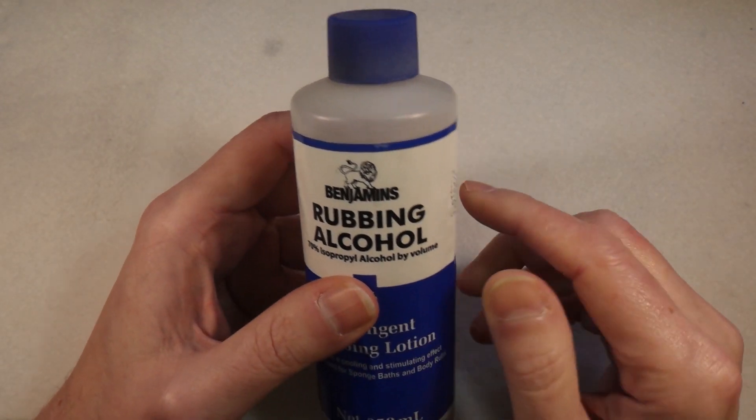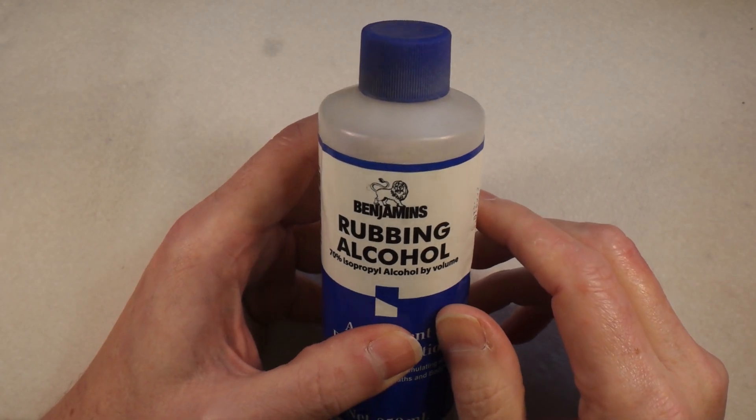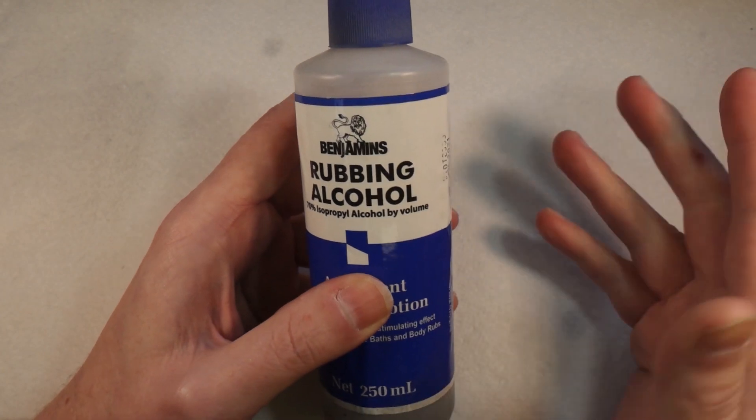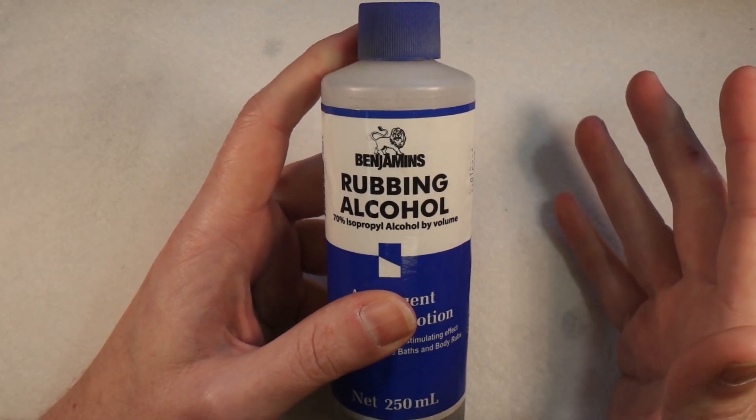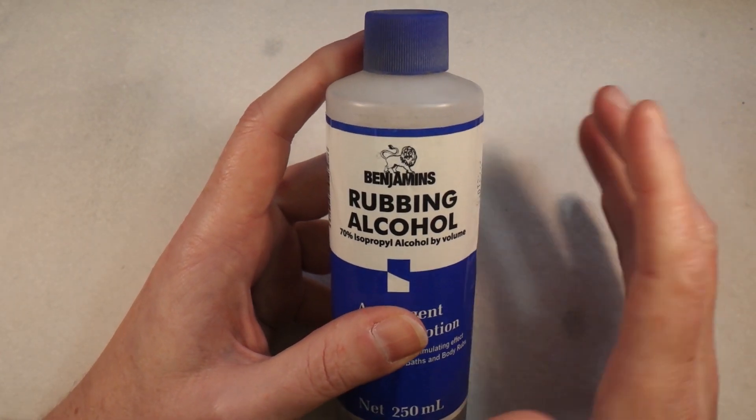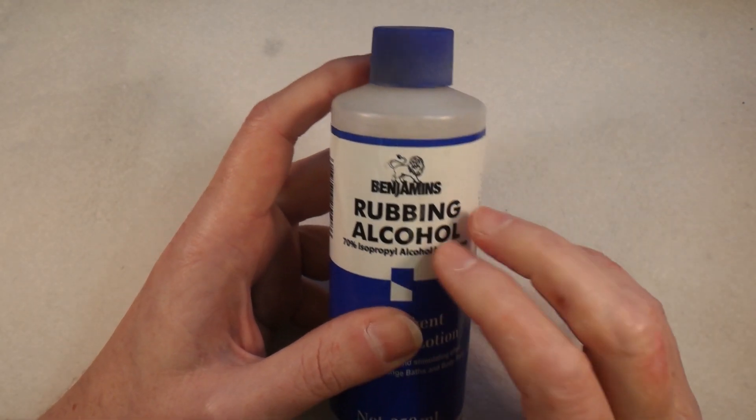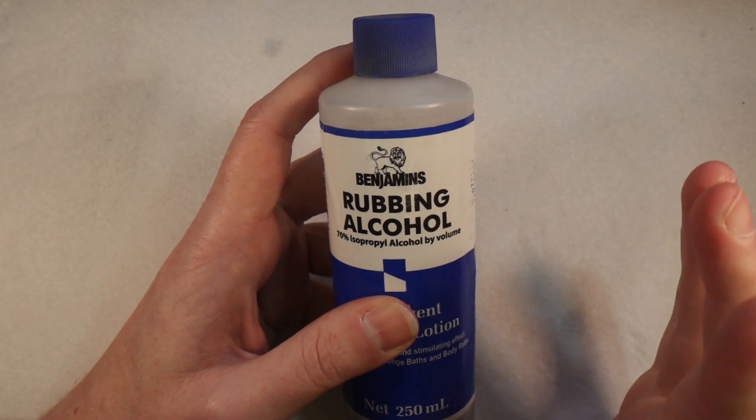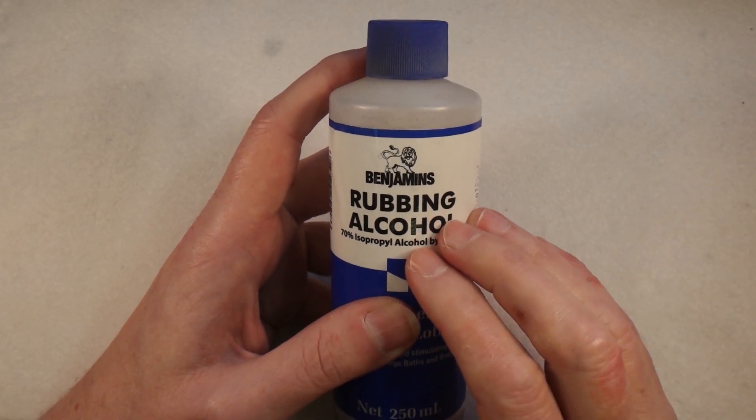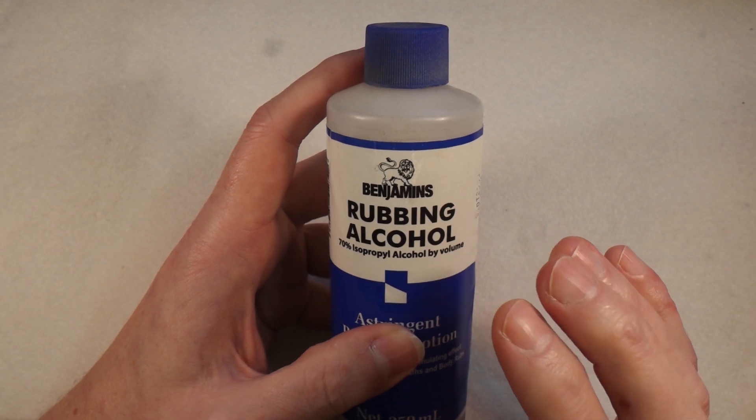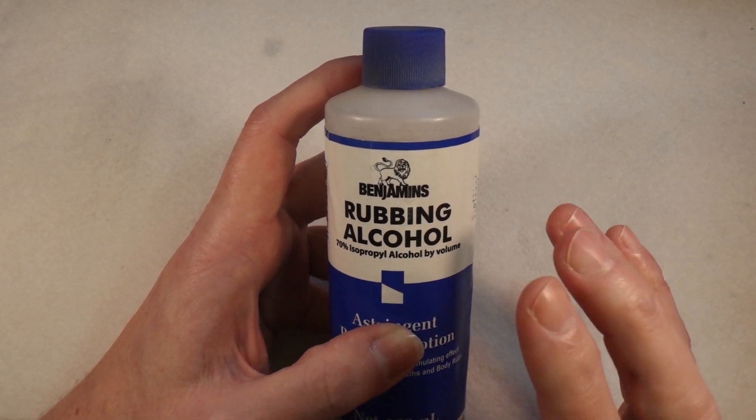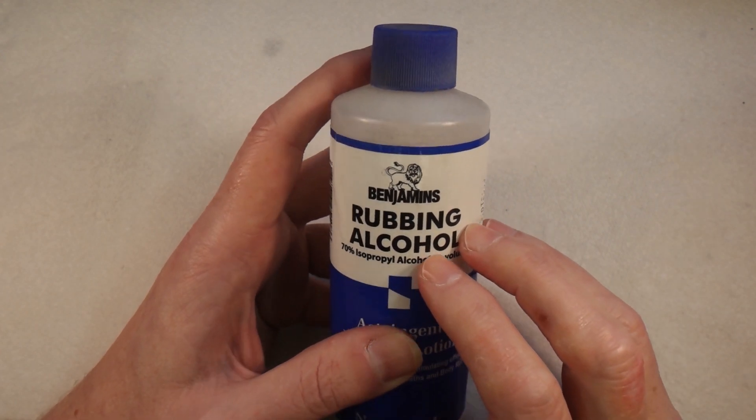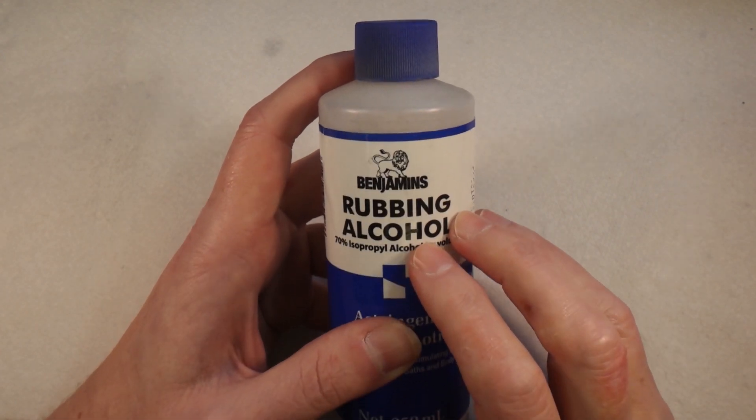Basically we're going to make this stuff a little bit more user friendly. This is 70% IPA. Anything above I think 60% will work very well as a hand sanitizer. You can just pour this stuff straight on your hands and it will work incredibly effectively. The trouble is it will dry your skin out, so what we want to do is try and prevent that or at least limit that. The best thing to add to it is aloe vera gel.